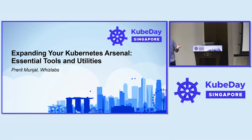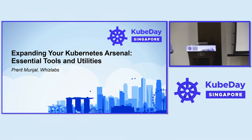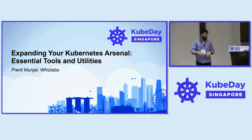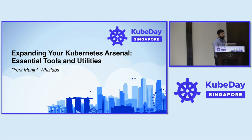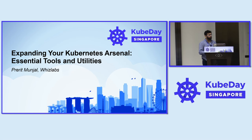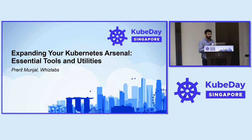V cluster is virtual clusters — it's like a cluster inside a cluster. Rancher will do a similar type of thing. Rancher mainly comes from the cluster management space, while V cluster is a newer CNCF project where you can create virtual clusters on top of clusters dynamically. Thank you very much.